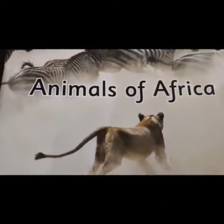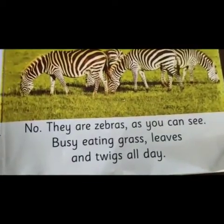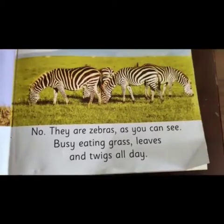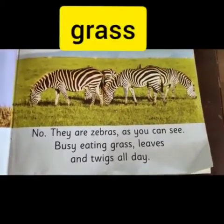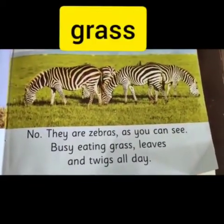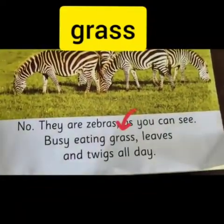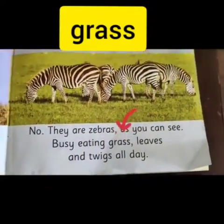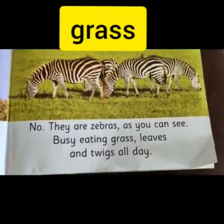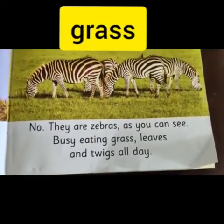Our first word is 'grass'. Can you find the word grass here on this page? Yes, it's here. And what sentence can we make with the word grass? The zebras are eating grass and leaves.